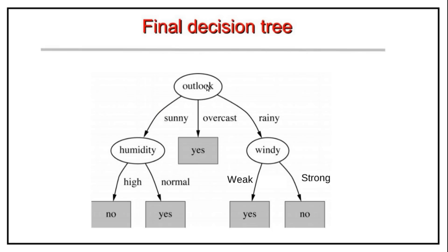The final decision tree looks like this: root is outlook with three decision rules — sunny, overcast, and rainy. For overcast, directly write yes. For sunny, check humidity: if high then no, if normal then yes. For rainy, check windy: if weak then yes, if strong then no. This was all about decision tree and ID3 algorithm. In the next video we will implement the same in Python, so stay tuned. Do like, subscribe, share, and comment. You can also write to us at codewrestling@gmail.com. Happy learning, thank you!